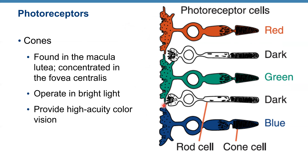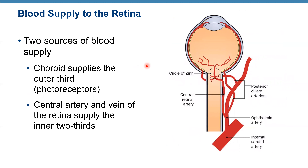Blood supply of the retina has two sources. The choroid supplies the outer third, including the photoreceptors. Looking at this picture: the internal carotid artery gives off the ophthalmic artery, from which we have posterior ciliary arteries that supply the choroid, and another branch called the central retinal artery that supplies the inner two-thirds of the retina.